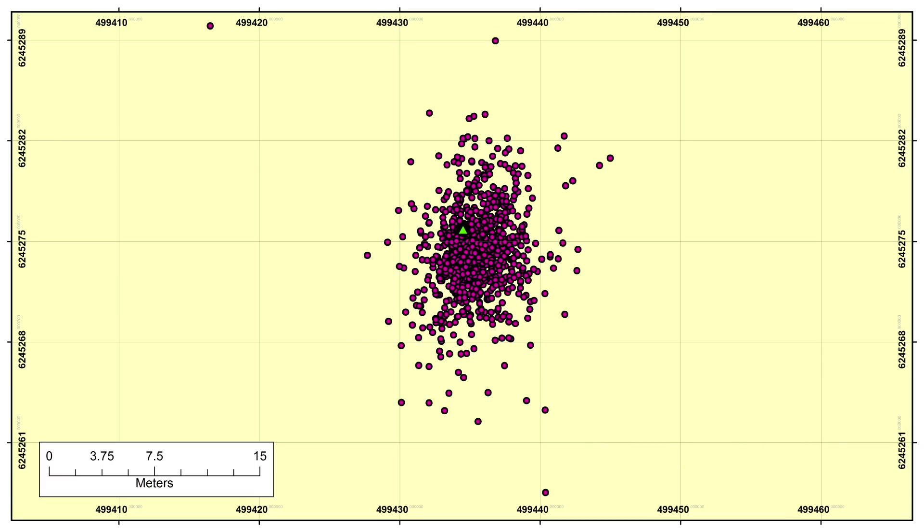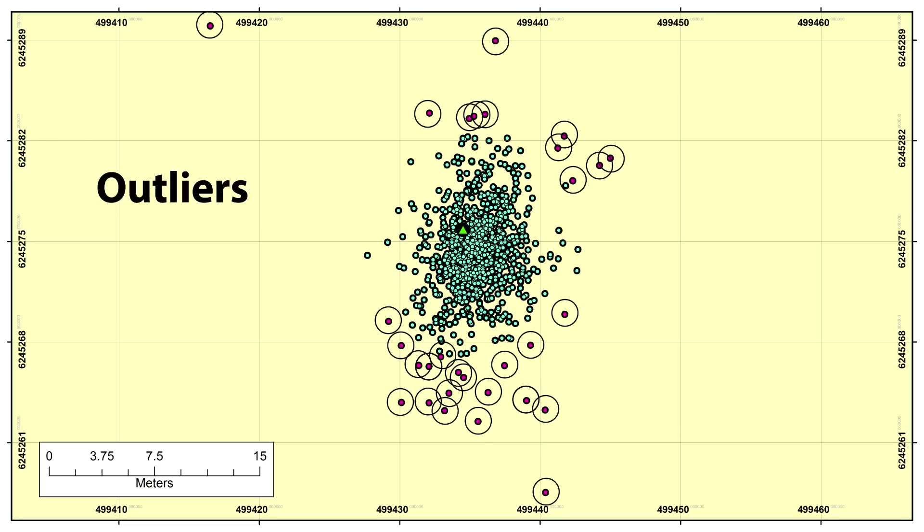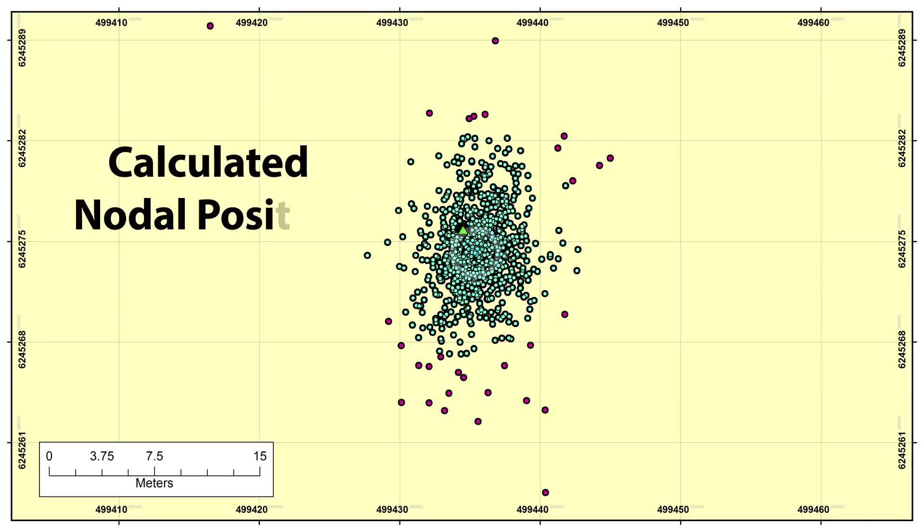We then identify and remove outliers. We incorporate the position dilution of precision values. We incorporate the number of satellites, satellite geometry, and other features, and arrive at a final computed nodal position.